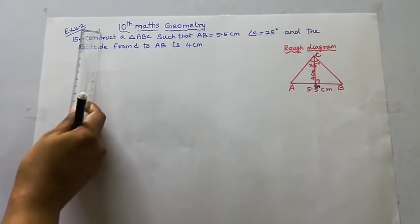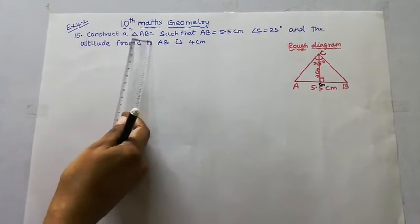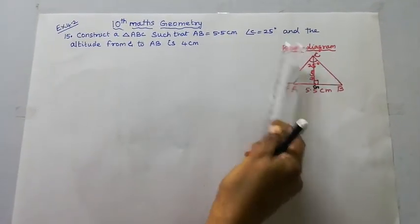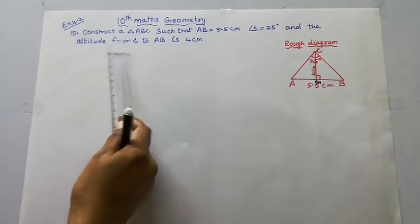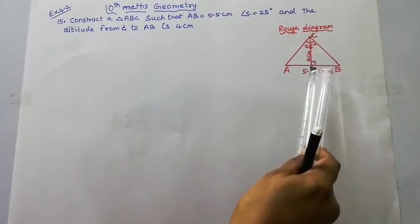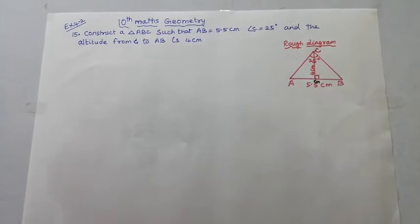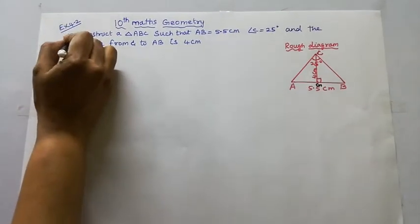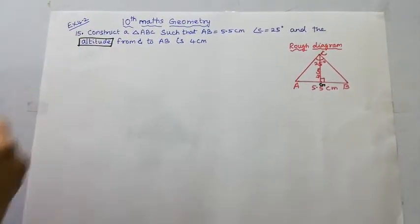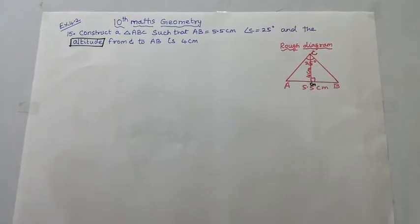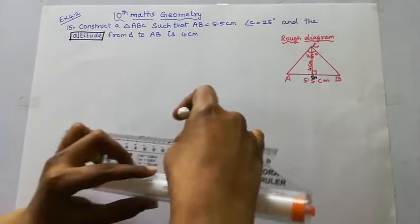Hello students, welcome to Max and Tumble channel. Class 10 standard, Max Geometry Exercise 4.2, problem 15. Construct triangle ABC such that AB equals 5.5 centimeter, angle C equals 25 degrees, and the altitude from C to AB is 4 centimeter. This is a triangle — and the keyword here is 'altitude.' First, we do a rough diagram, then we proceed with the construction.